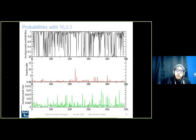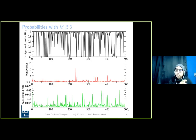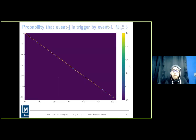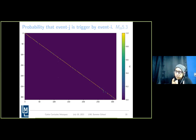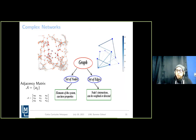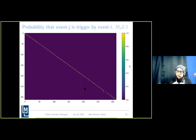With this, we can find the probability that events are background events, allowing us to separate background events from triggered events — classically, the aftershock sequences of a main earthquake. We can also find the probability that event j is triggered by event i, yielding a matrix of transition probabilities. This can be represented as a complex network, identified by an adjacency matrix, setting a probability threshold so earthquakes are connected if one likely triggered the other.